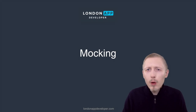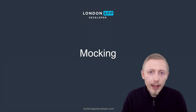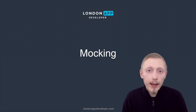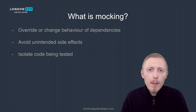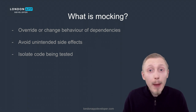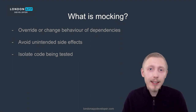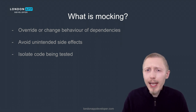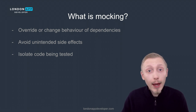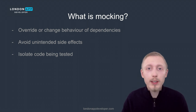In this section we're going to introduce an advanced area of testing called mocking. Mocking is when you override or change the behavior of the dependencies of the code that you're testing. We use mocking to avoid any unintended side effects and also to isolate the specific piece of code that we want to test.